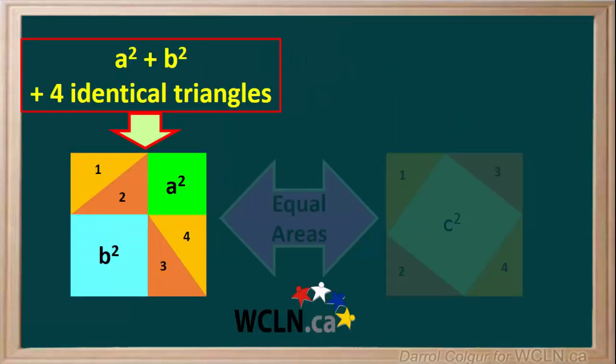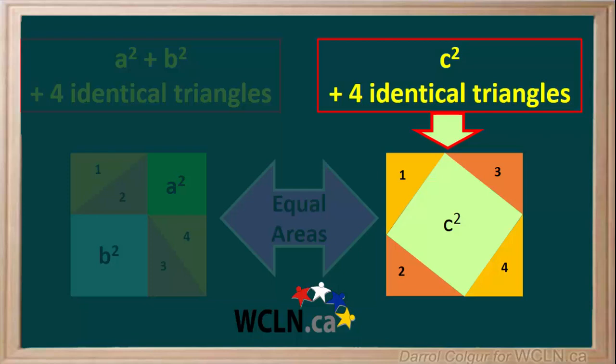Notice, the total area in the square on the left is made up of A squared plus B squared plus four identical triangles that we numbered 1, 2, 3, and 4. And the total area in the square on the right is made up of C squared plus those same four identical triangles, 1, 2, 3, and 4.